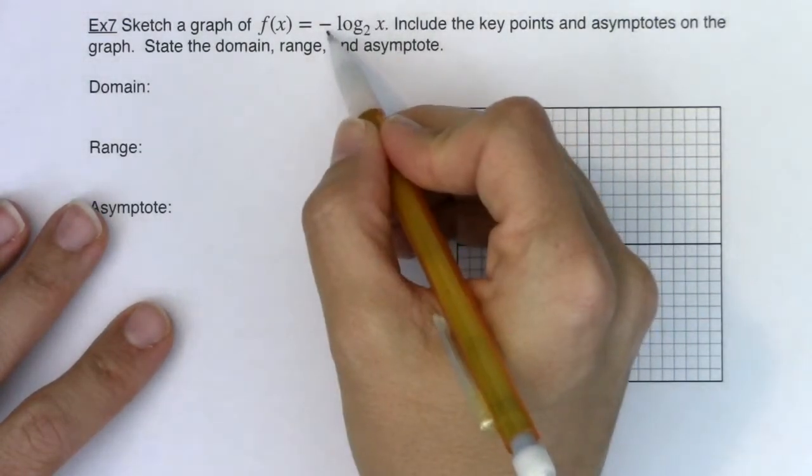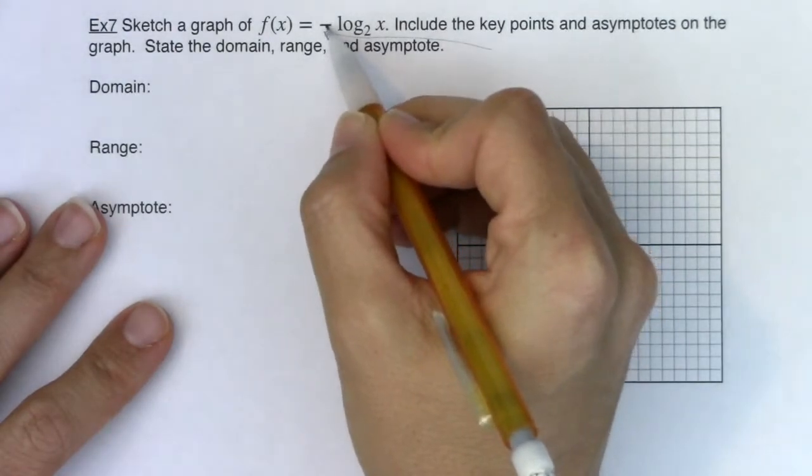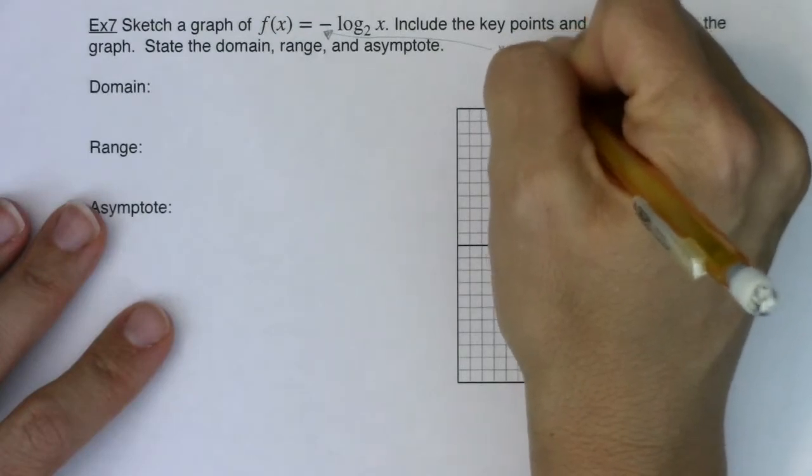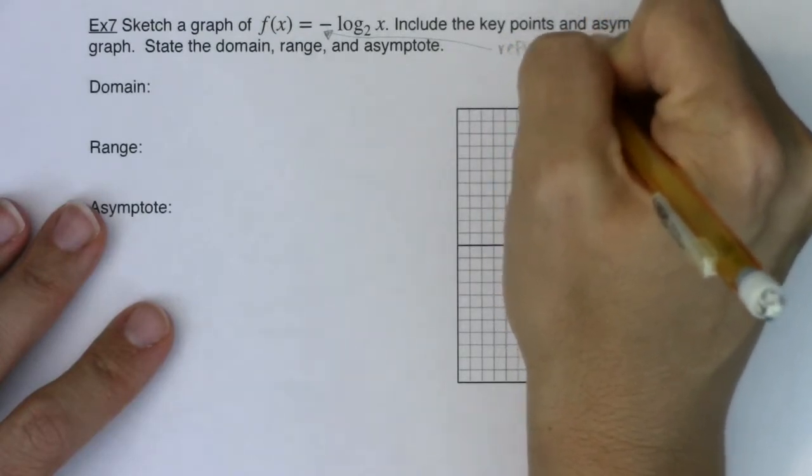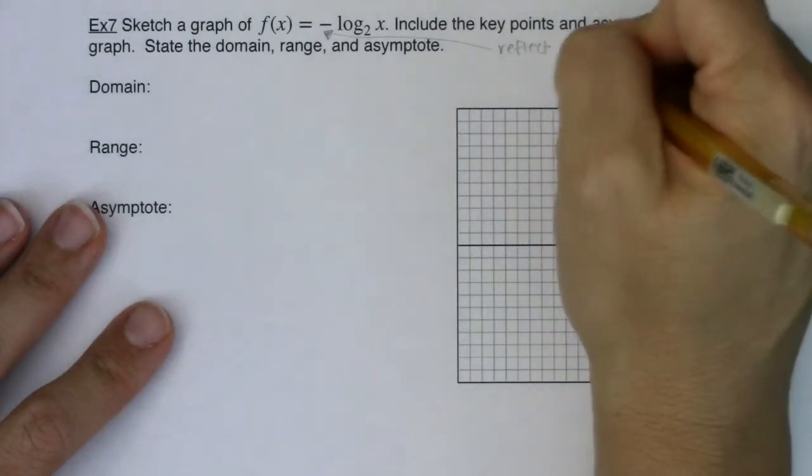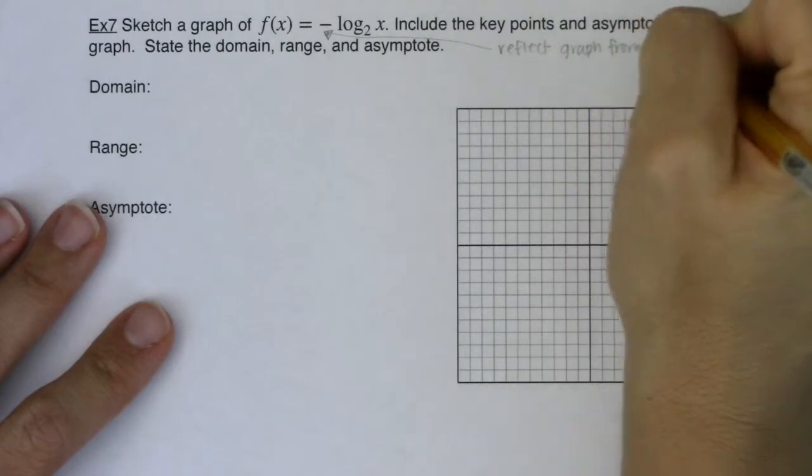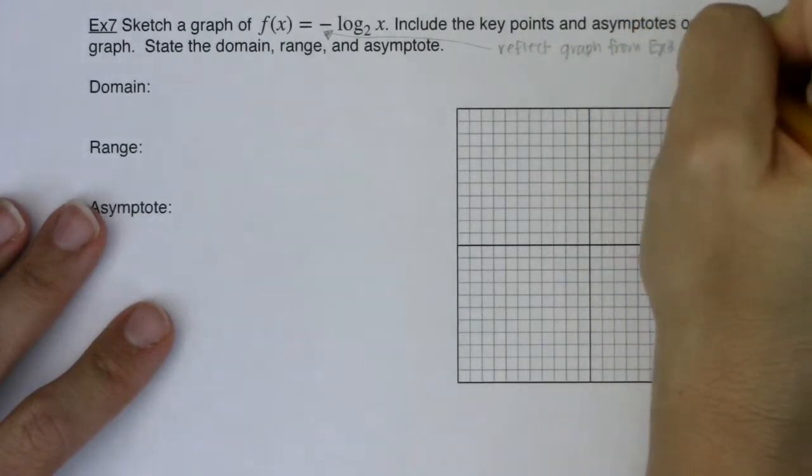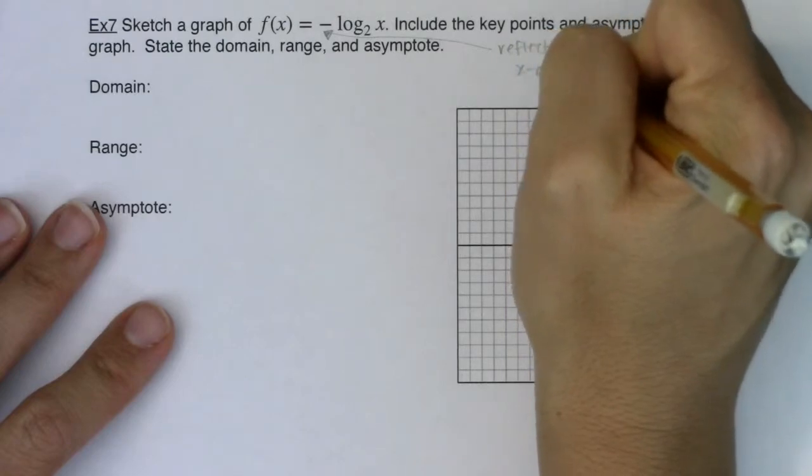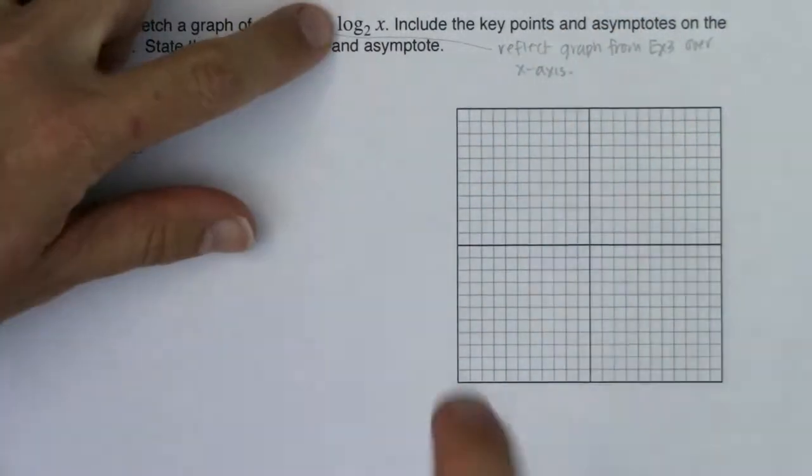So if you remember way back from section 3.5, when you have a negative symbol outside of your function, outside of the grouping symbols, this is going to reflect your graph over the x-axis and what happens is any y value,